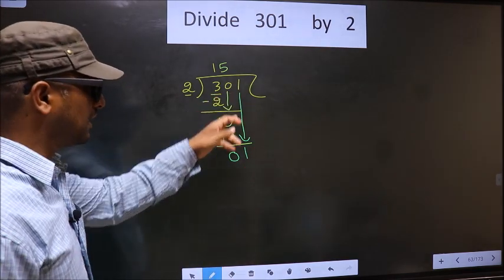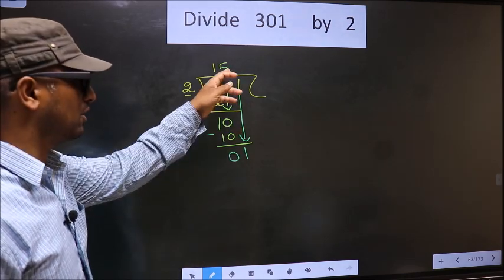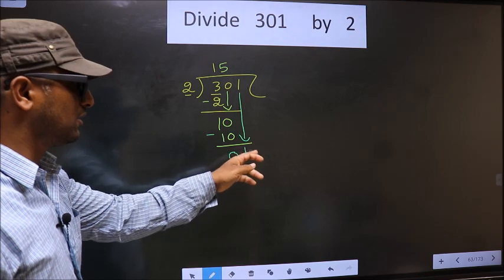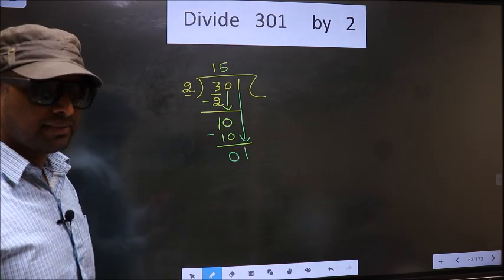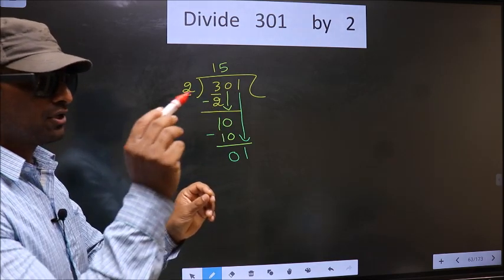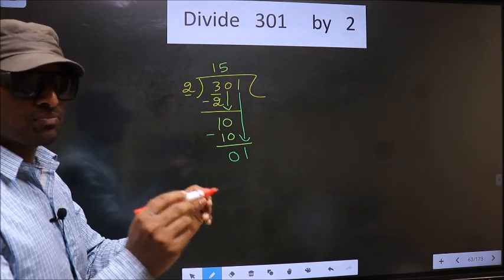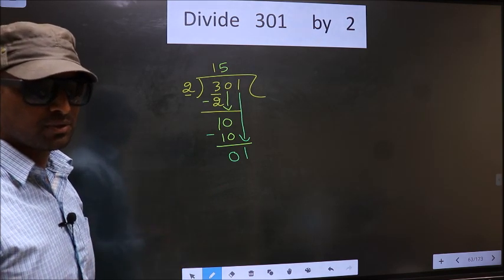Just now, you brought the number down. And in the same step, you want to put a dot and take 0 here. Which is wrong. I repeat. Bringing the number down and putting a dot and taking 0, both at the same step, you are not supposed to do.